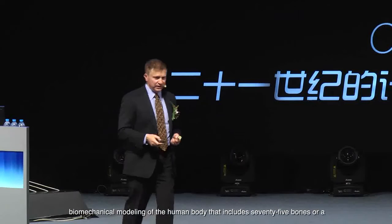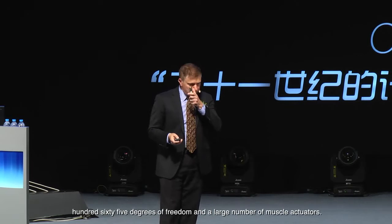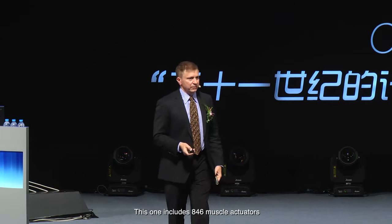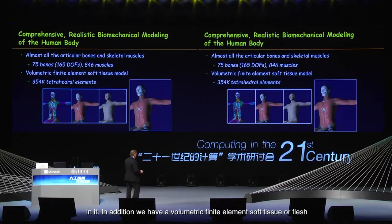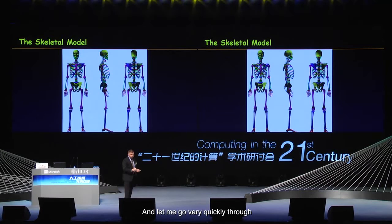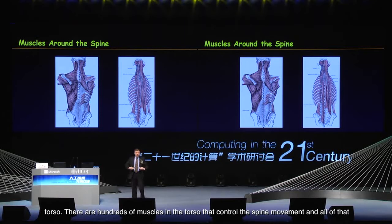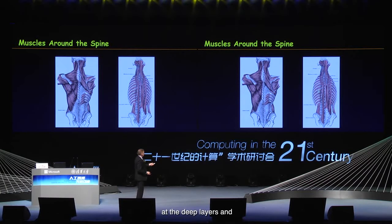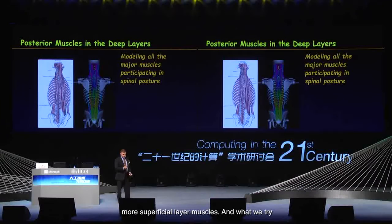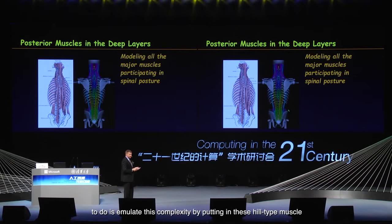So here we have a comprehensive, realistic biomechanical modeling of the human body that includes 75 bones — 165 degrees of freedom — and 846 muscle actuators. In addition, we have a volumetric finite element soft tissue or flesh in the body with 300,000 or so tetrahedral finite elements. Here's the skeleton and all the various bones. Looking at anatomy, you see lots of muscles in the torso — hundreds of muscles controlling the spine movement, at deep layers and more superficial layers. We emulate this complexity by putting in Hill-type muscle actuators into our model.